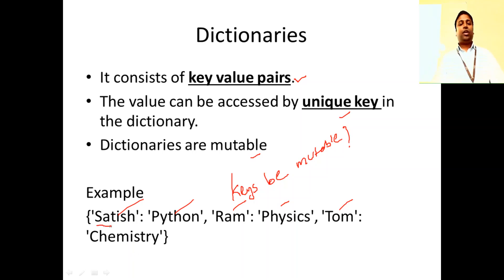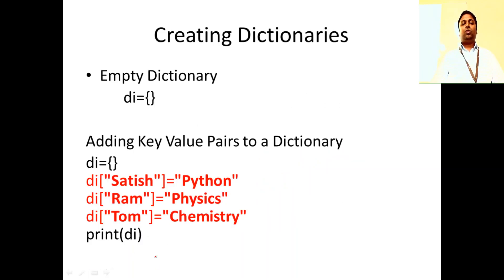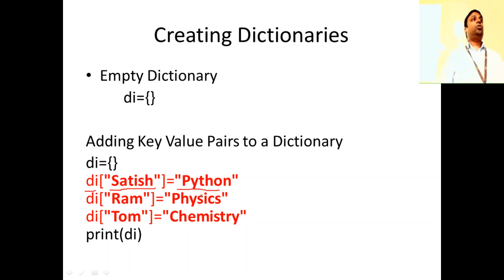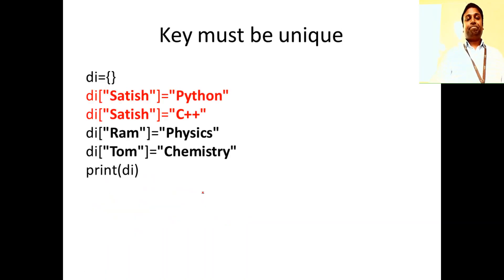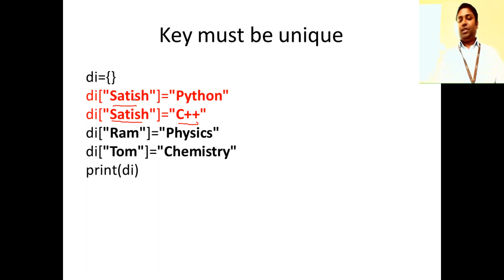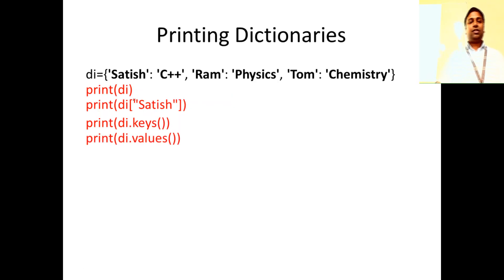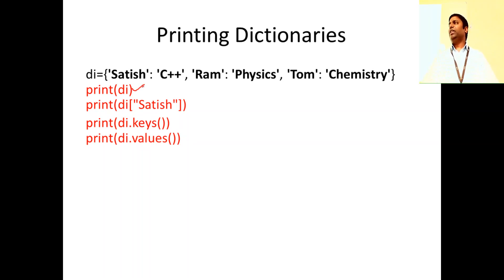Keys should be unique. This slide is about adding key-value pairs to a dictionary. You give the dictionary name, then the key name, and set it equal to the value. If you have duplicate keys, the latest value will be updated for that particular key. These things were covered in the last class — just a recap.